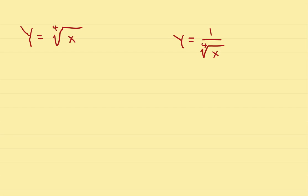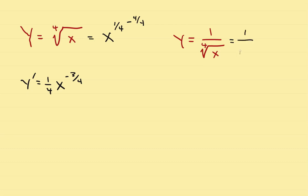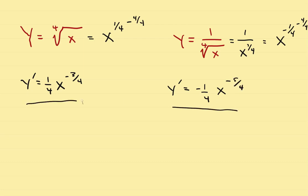For the fourth root of x, change it to x to the 1 fourth. The derivative is 1 fourth x, and subtract 4 fourths, giving x to the negative 3 fourths. If it is 1 over the fourth root of x, rewrite as 1 over x to the 1 fourth, then move the x up: x to the negative 1 fourth. The derivative y prime equals: bring negative 1 fourth down in front, then subtract 4 fourths, giving x to the negative 5 fourths. Those are a couple of radical examples.